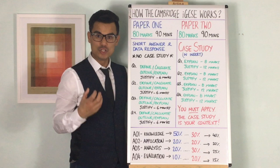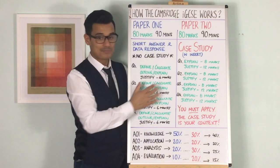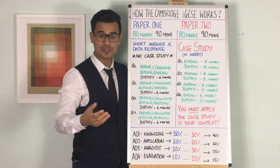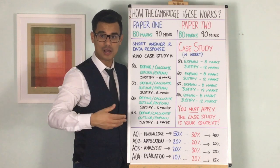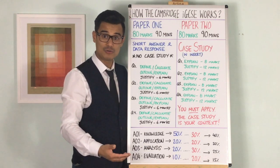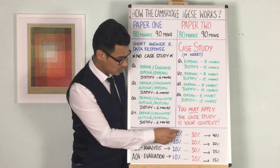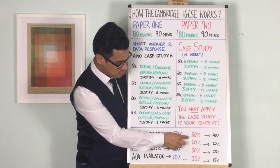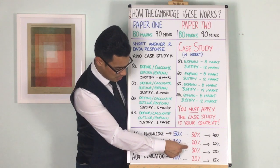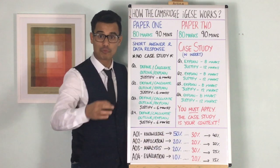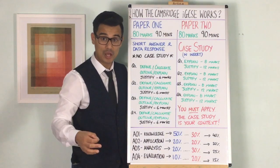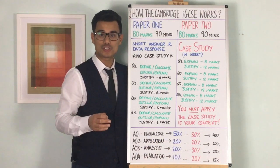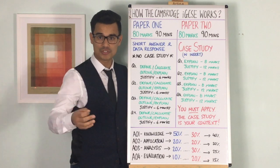Paper 2 is different and arguably harder because the marks come from the harder skills. You only get 30% from knowledge, 20% from application, 30% from analysis — so you've got to know your pros and cons well — and then 20% for evaluation, which depends on your judgment.